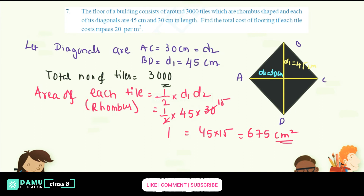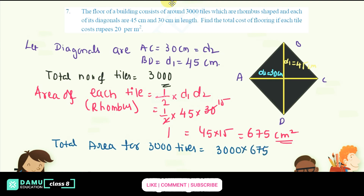Now we need to find the total area for all the tiles. Total area for 3000 tiles equals 3000 into 675. That gives us 20,25,000 centimeter square — that is, 20 lakhs 25 thousand centimeter square.